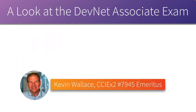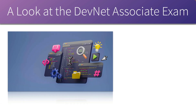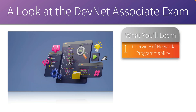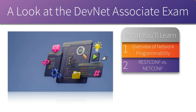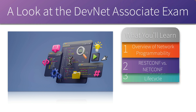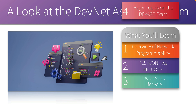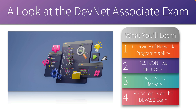Hi, my name is Kevin Wallace. I'm a double CCIE, and here's what's on tap for this video. We're going to begin with an overview of what is network programmability and what can it do for us. We'll learn several different terms. Then we'll talk about how we can create a model that represents the configuration of a router interface, and how that model can be used to send out appropriate commands to our network device. Then we'll consider the DevOps lifecycle, and I want to identify four major topics on the DevNet Associate exam that you'll definitely need to know.